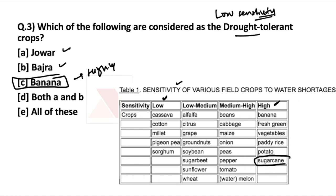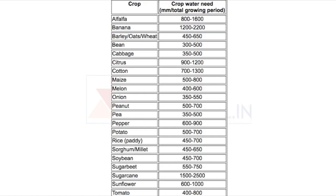There was a previous exam question on the water requirement for sugarcane, so you need to learn about the water requirements of different crops. A table shows approximate seasonal crop water needs. Banana, rice, sugarcane, and citrus are among the crops with the highest water requirements — thus they are not drought tolerant. Melon and onion have comparatively less water requirements.